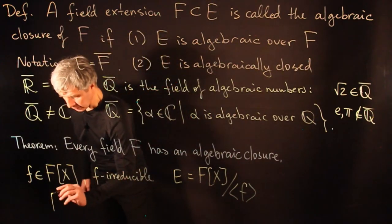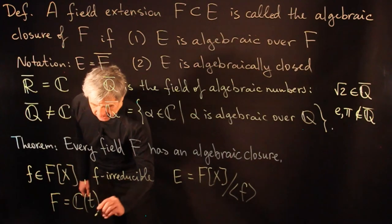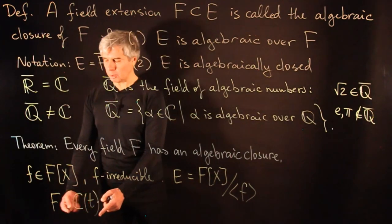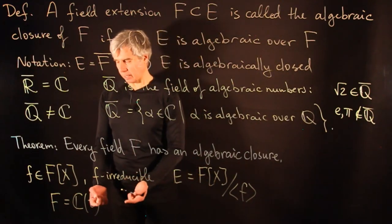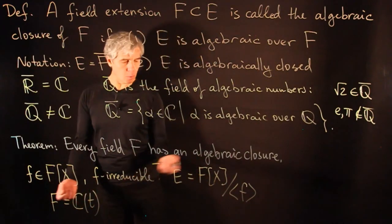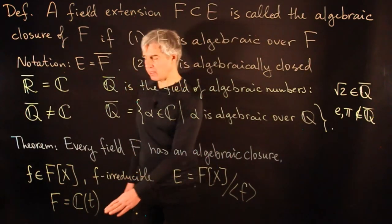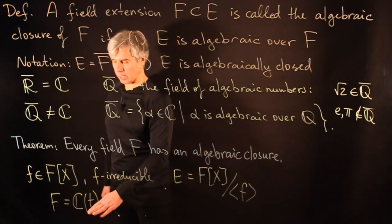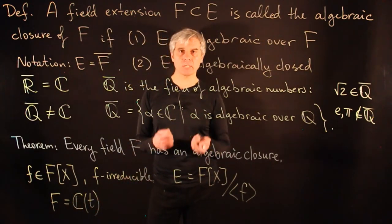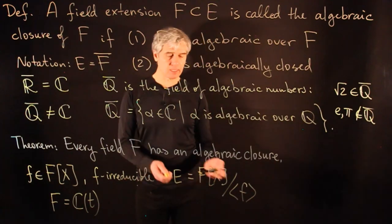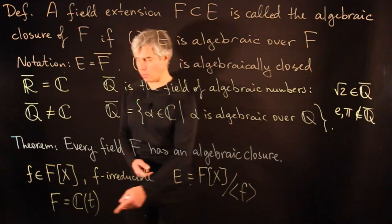The problem is to glue all these extensions together, and these problems become set-theoretic. For a field like rational functions in t, the number of irreducible polynomials is huge, and the main difficulty is assembling all these field extensions into one big set. The main challenge in constructing the algebraic closure is set-theoretic: we need to construct one big set containing the roots of all irreducible polynomials over C(t).